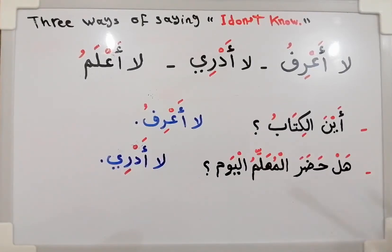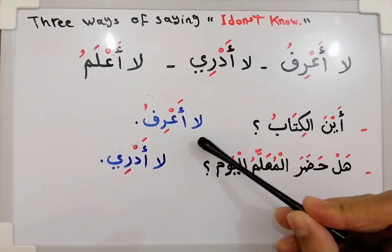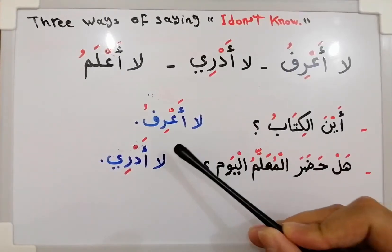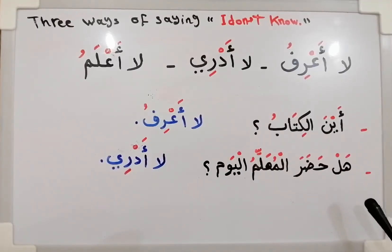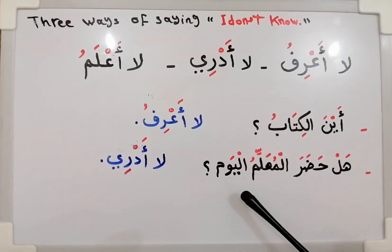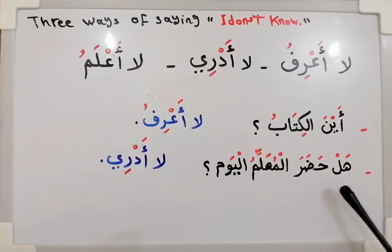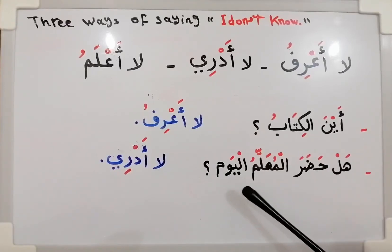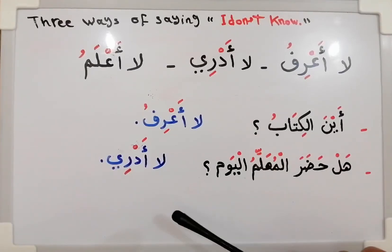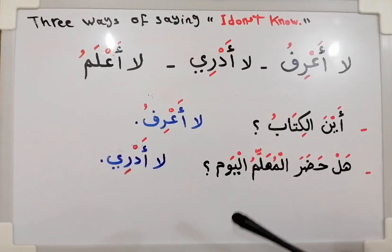Example: أين الكتاب — 'Where is the book?' The answer is لا أعرف — 'I don't know.' Another example: هل حضر المعلم اليوم — 'Did the teacher come today?' The answer can be لا أدري, لا أعرف, or لا أعلم — all meaning 'I don't know.' والسلام عليكم ورحمة الله.